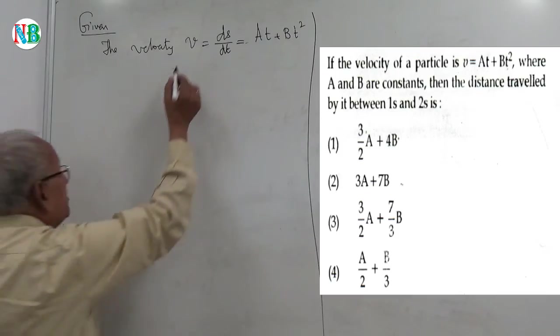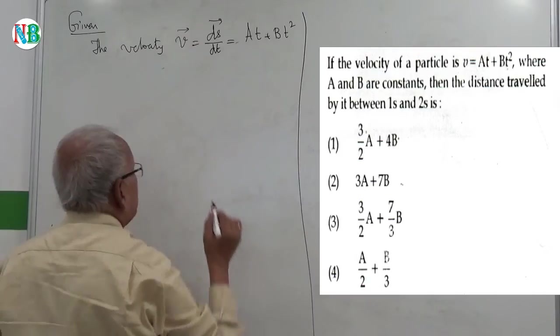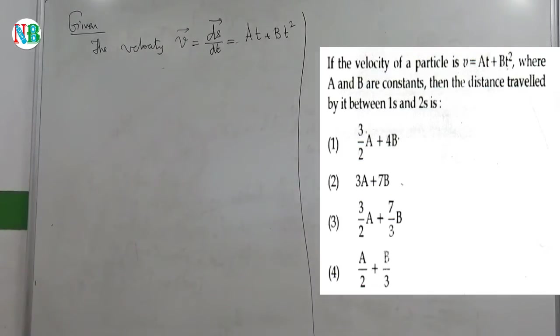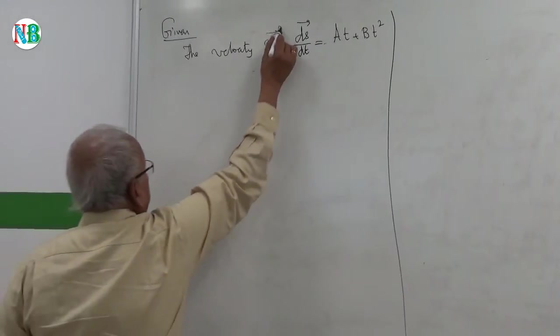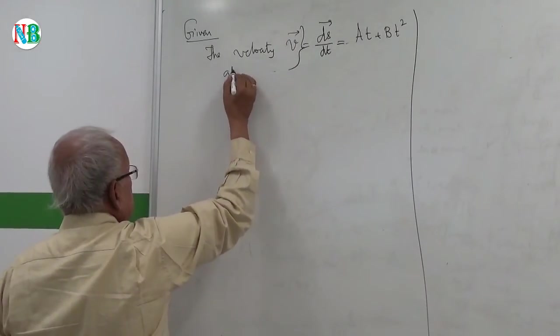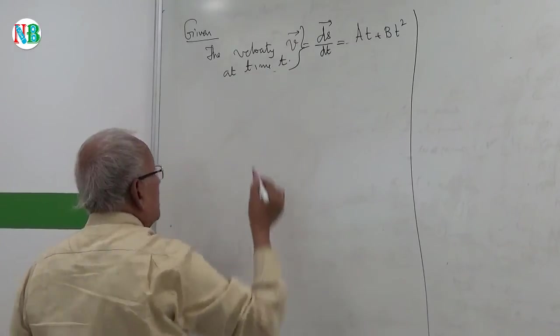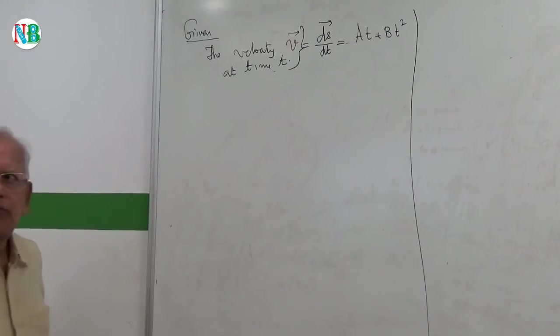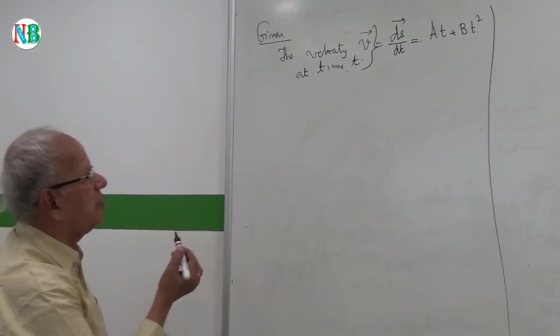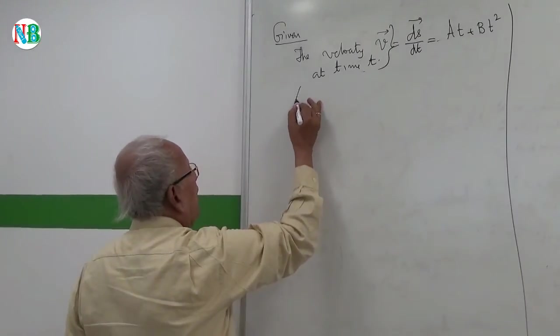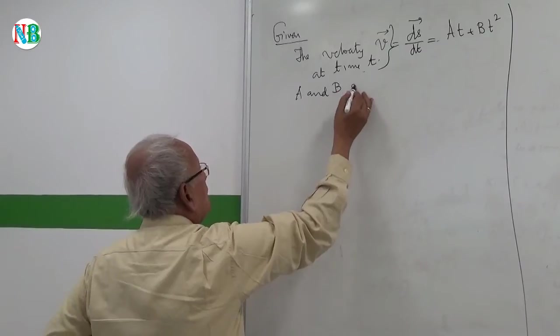So if you call it displacement, it will become a vector. And T is the time. So the velocity V at time T. So A and B are given to be constants.